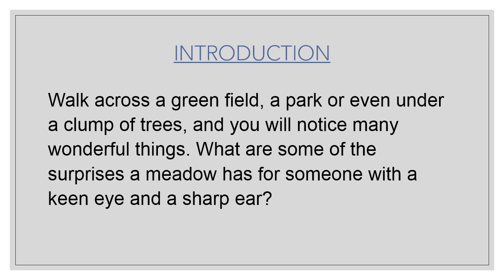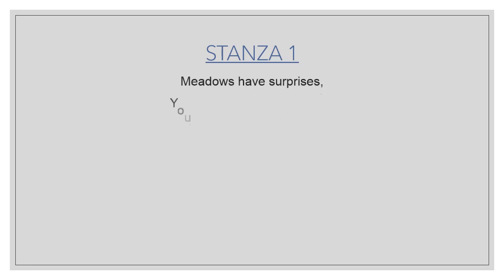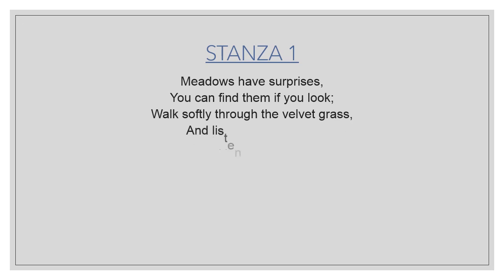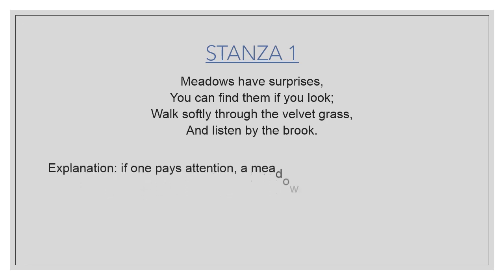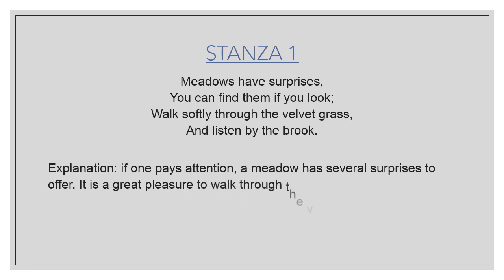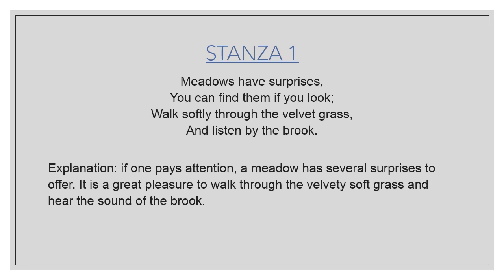Moving to the first stanza. Stanza One: 'Meadows have surprises, you can find them if you look, walk softly through the velvet grass, and listen by the brook.' Explanation: if one pays attention, a meadow has several surprises to offer. It is a great pleasure to walk through the velvety soft grass and hear the sound of the brook. Brook means a small river — if you listen to the sounds of the river moving, it's so peaceful.